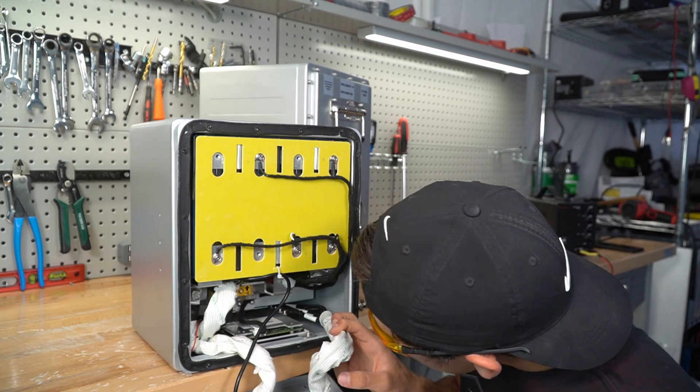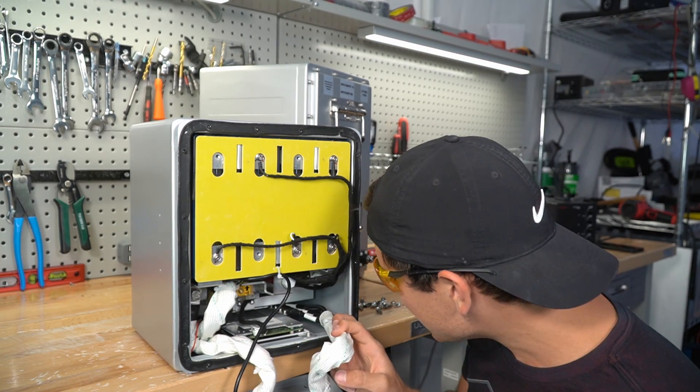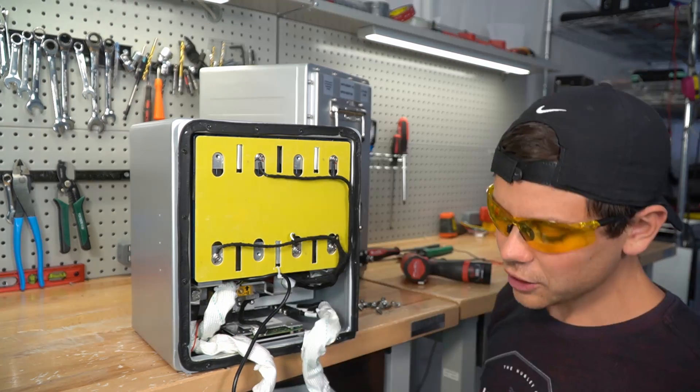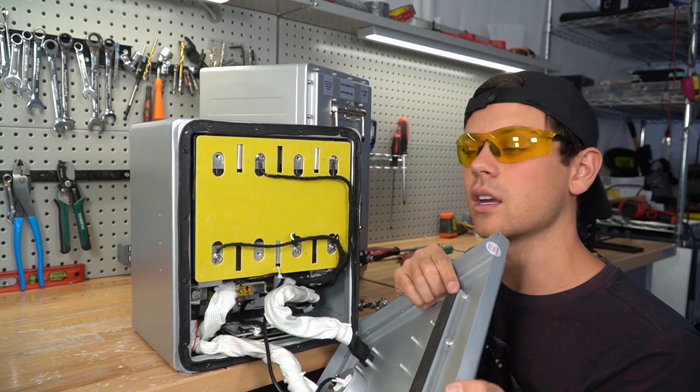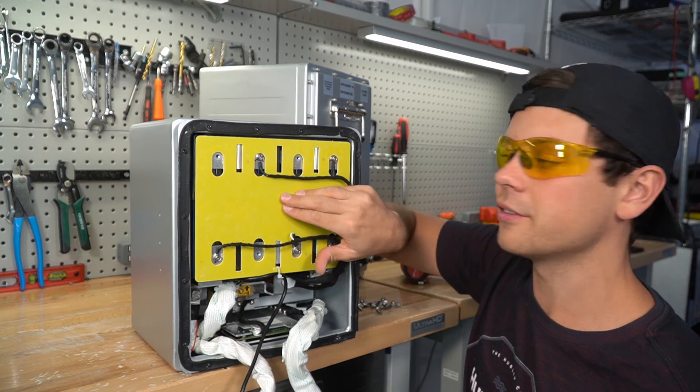The connections look good. We have heat shrink on everything. So yeah, let's put it back together again. Look at the attention to detail. There's even soft padding on the inside of the cover where it touches the fiberboard.